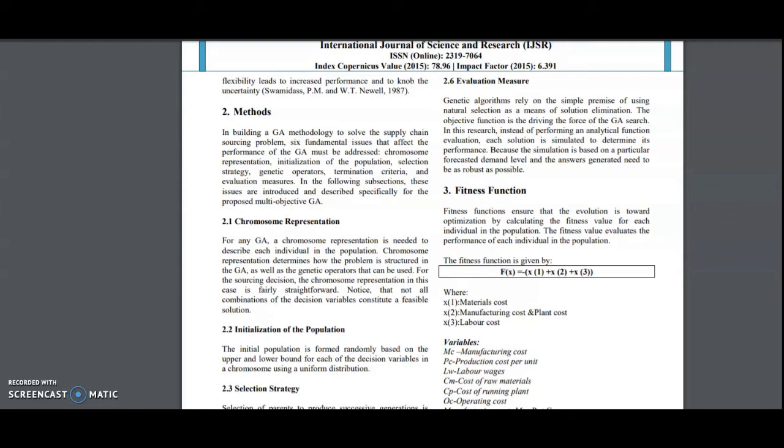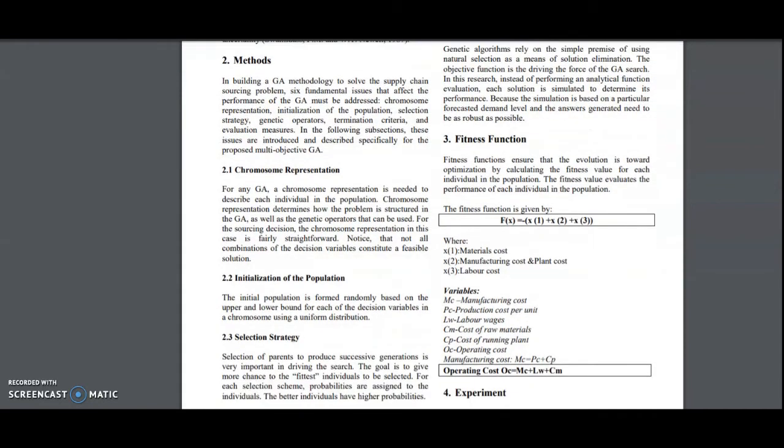Coming to the fitness function, very important. Fitness function ensures the evolution is towards the optimization by calculating the fitness value of each individual in the population. The formula of fitness function is f(x) = -(x1 + x2 + x3), where x1 is the material cost, x2 is the manufacturing cost and x3 is the labor cost. The variables are: MC manufacturing cost, PC production cost, LW labor wages, CEM cost of raw materials, CP cost of running plant, OC operating cost. Manufacturing cost is calculated MC = PC + CP.